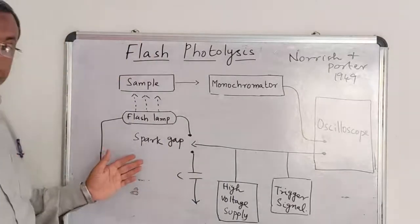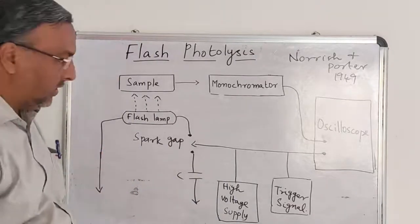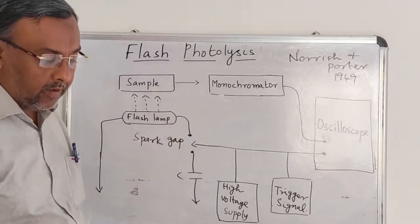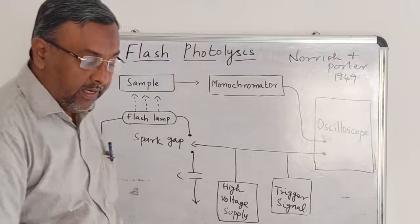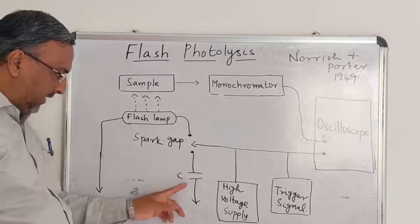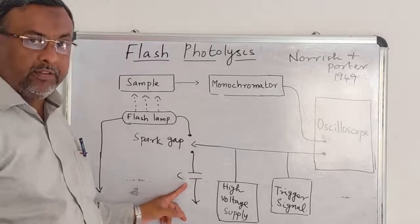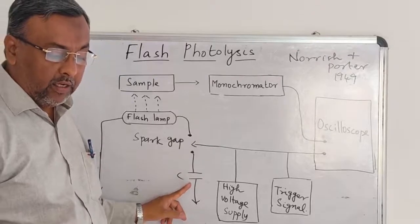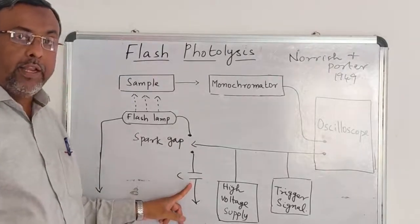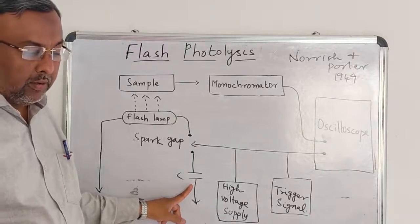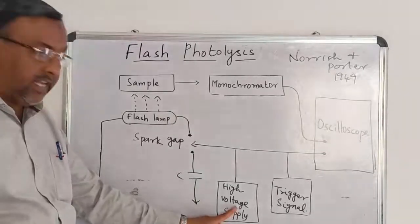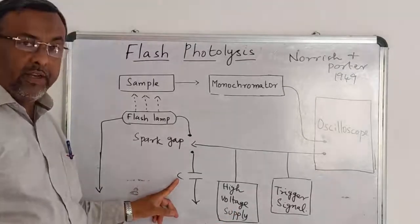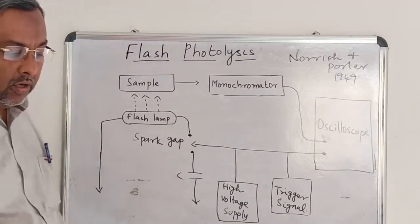The instrument used for flash photolysis is as shown in the diagram. Here, a condenser of high microfarad capacity, a capacitor is used. High microfarad capacity is charged into about 10,000 volts by a high voltage supply. The capacitor is charged into about 10,000 volts.